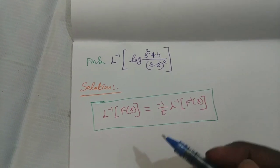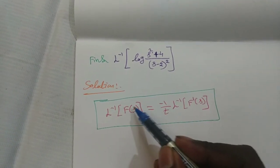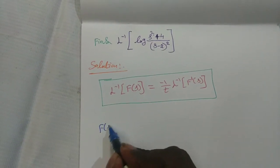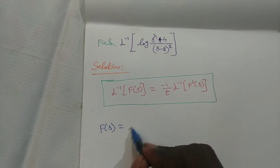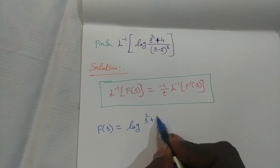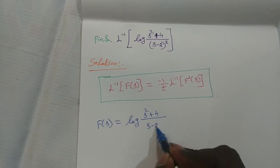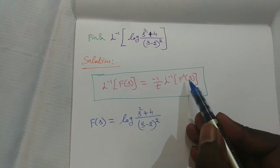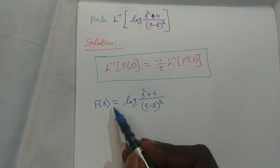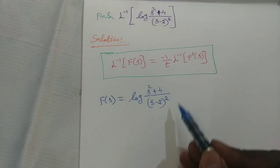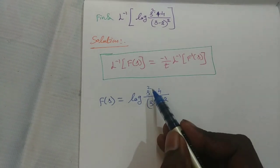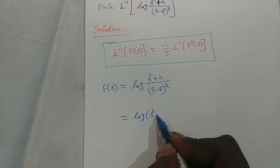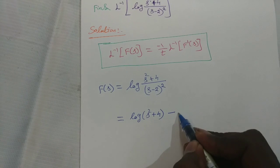Here we also have a special function. By comparing with L inverse of F(s), we take the inner value as capital F(s). So F(s) is equal to log((s² + 4) / (s − 2)²). To apply the derivative, I am first going to simplify. The simplification uses: log(m/n) can be written as log m minus log n.